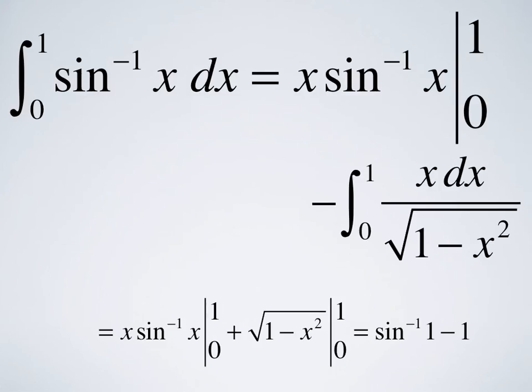Putting everything together, you get the integral from 0 to 1 of sine inverse of x dx equals x sine inverse x from 0 to 1, plus the square root of 1 minus x squared from 0 to 1, which gives sine inverse of 1 minus 1. The change of sign at the end came because we picked up the minus sign when we evaluated that integral.